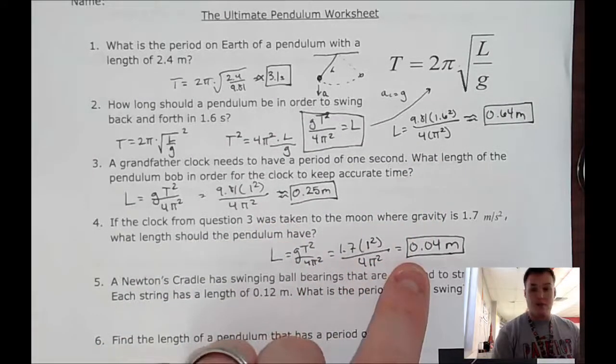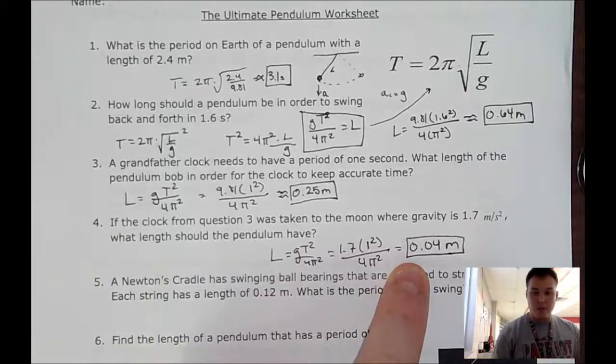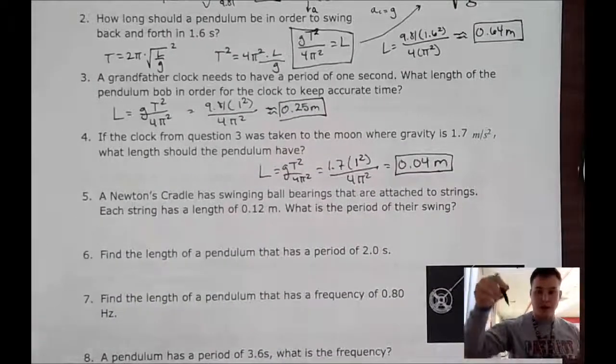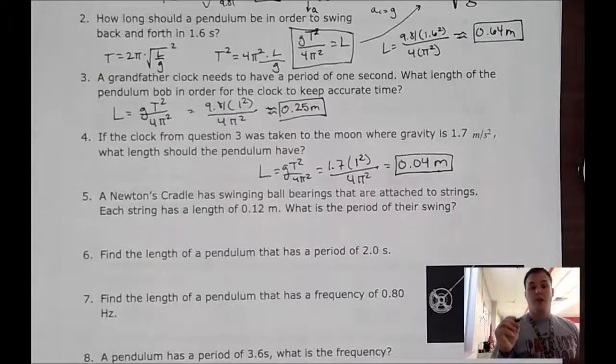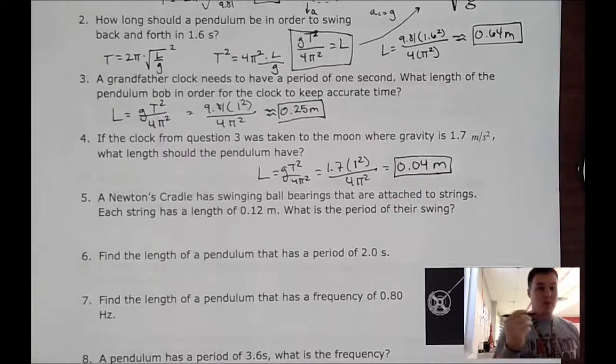Number 5. A Newton's cradle is one of those things that goes back and forth. It kind of hits another ball, barely comes off. They're attached to strings. Each string has a length of 0.12 meters. What's the period of their swing? So we're going to go back and use the basic formula.